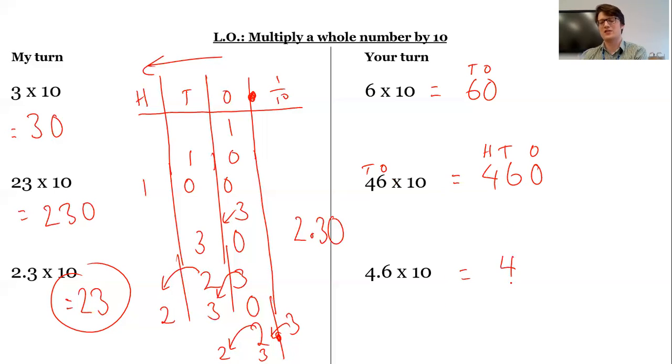And 4.6 times 10 is going to be 46. And a nice way to think about that as well is that, well, I know 4 times 10 is 40. 5 times 10 is 50. So 4.6 is going to be somewhere in between 40 and 50. Oh yeah, it's 46.